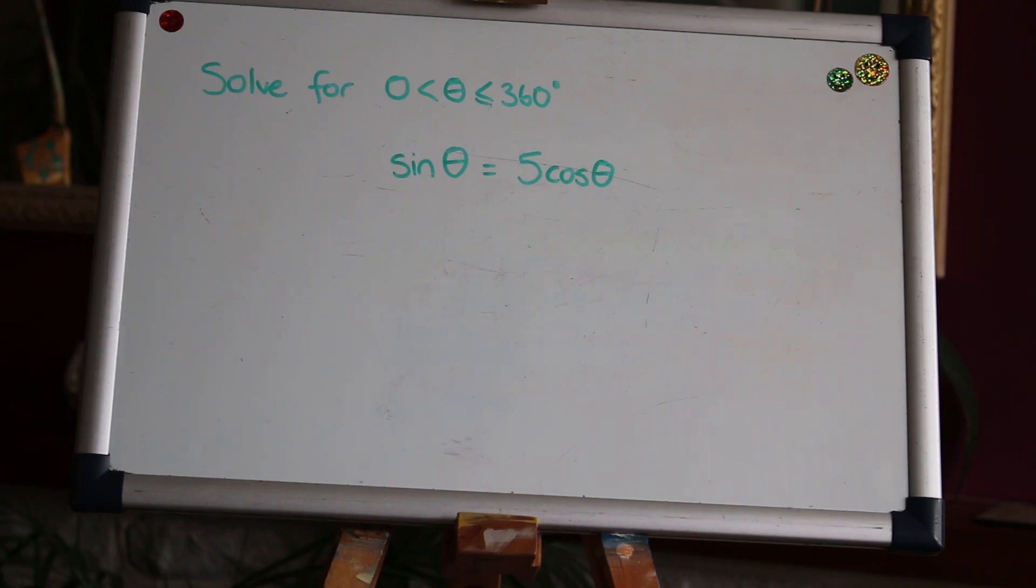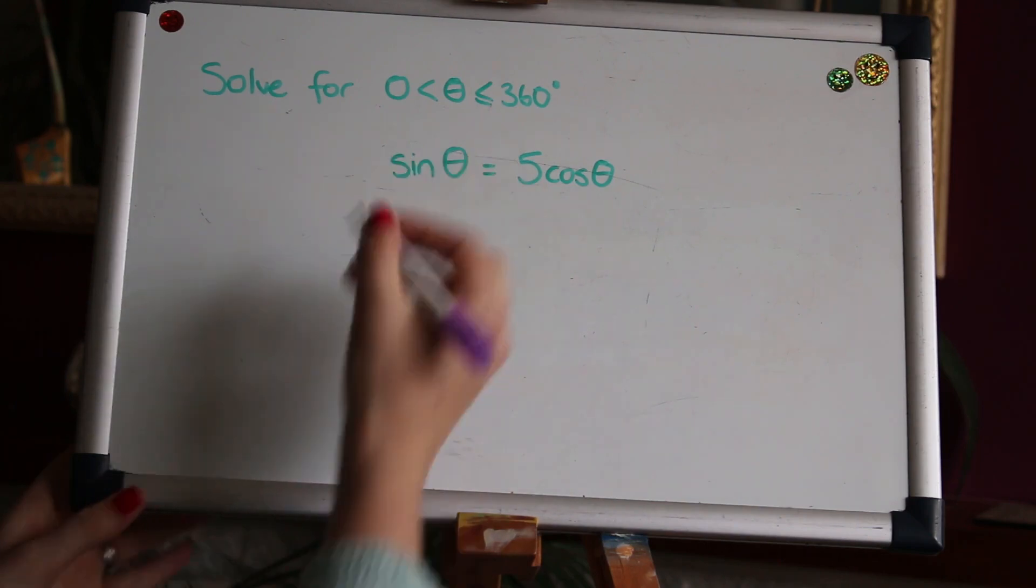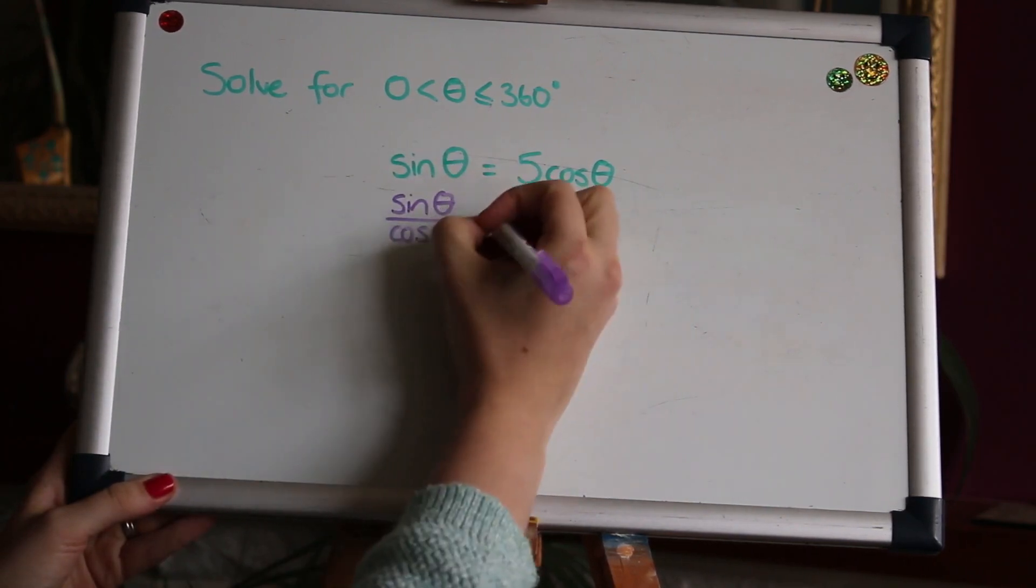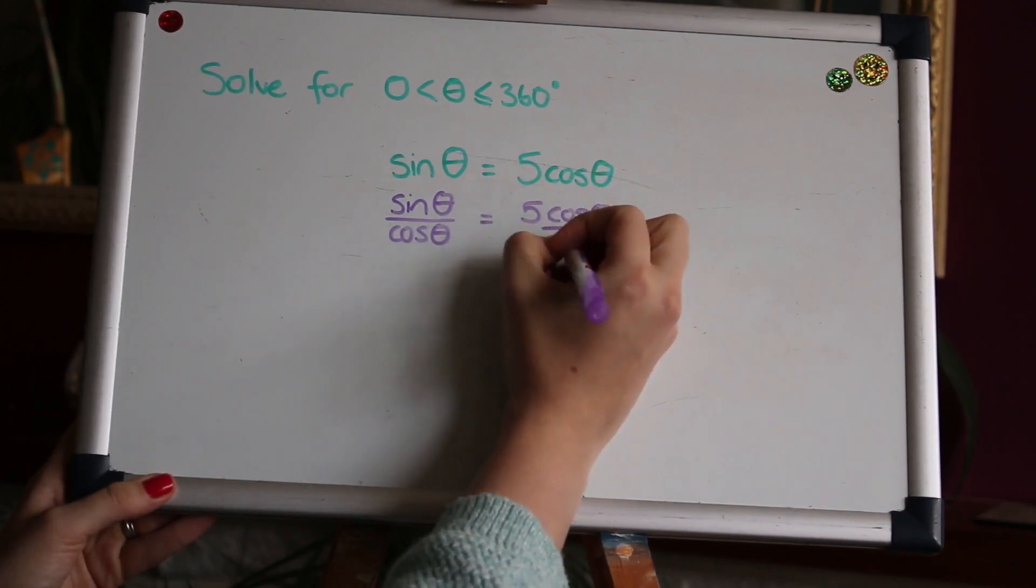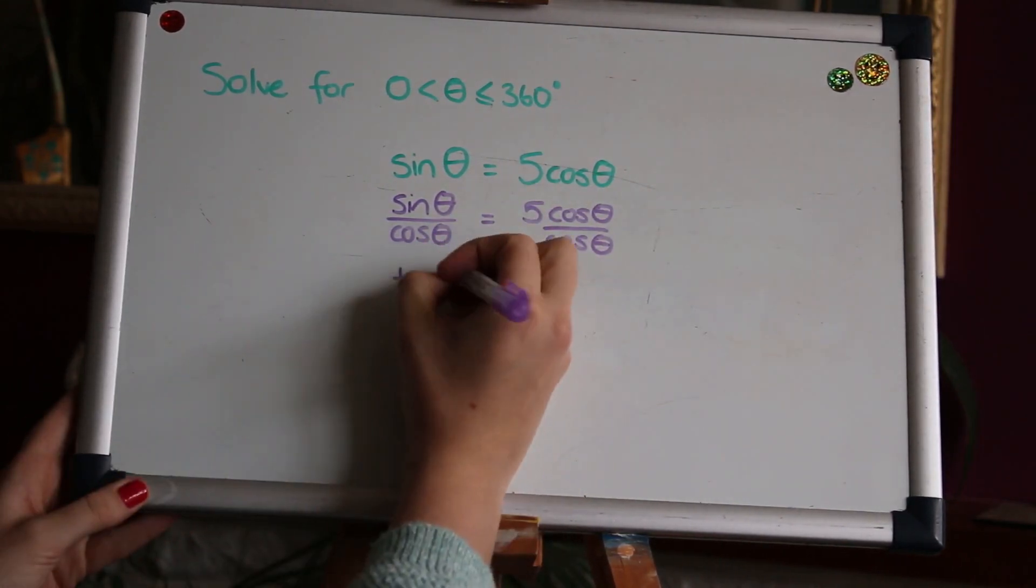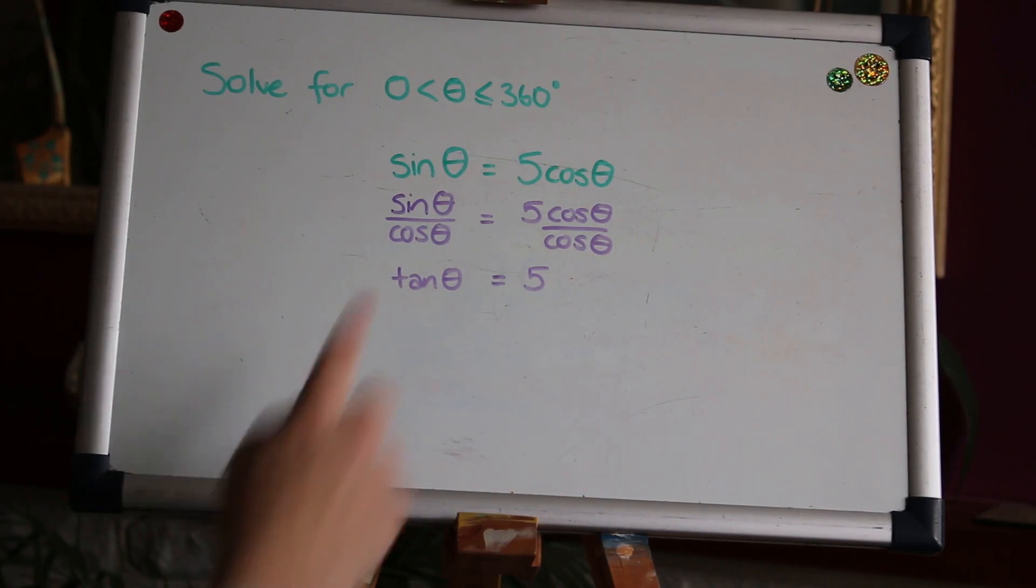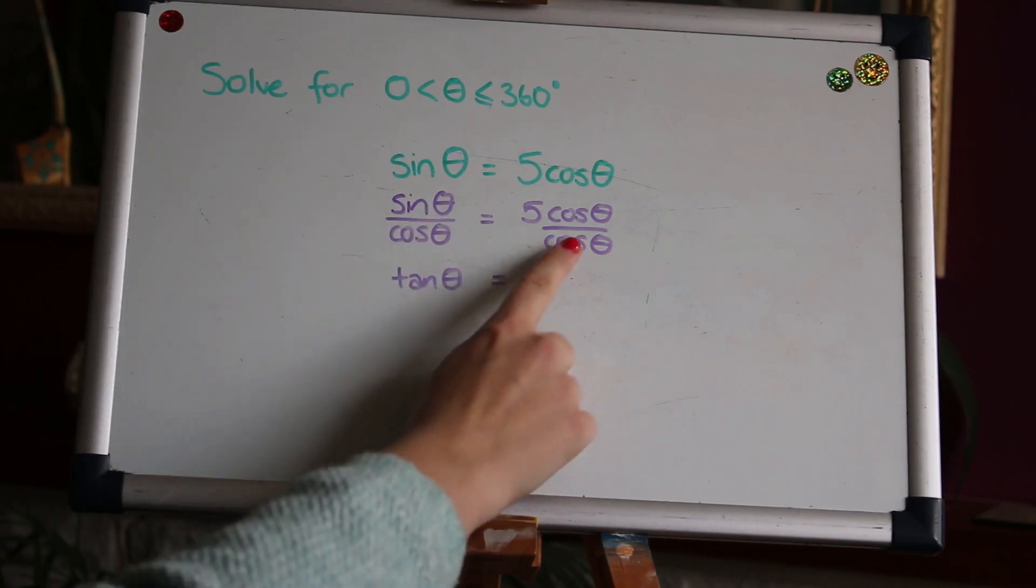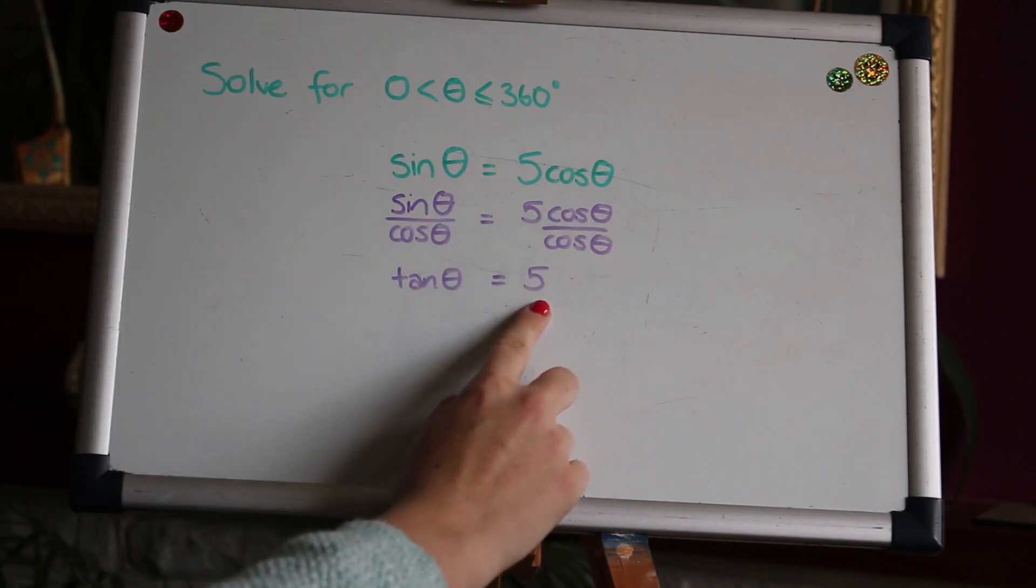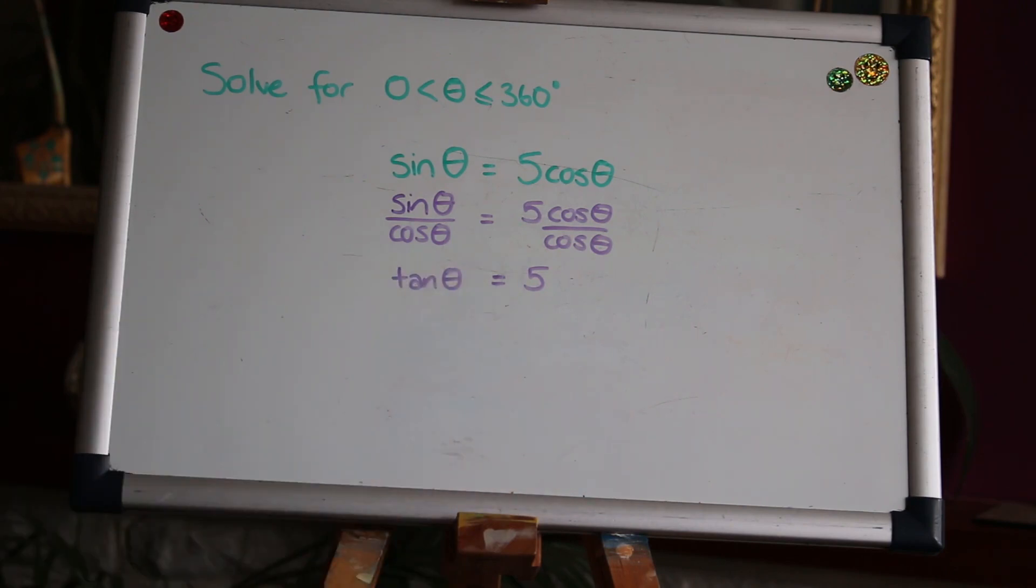So what we're going to do is divide both sides by cos and this is a trick that you can remember and use again in other questions. What that's done is turned this side into tan and got rid of the cos on the right hand side to leave us just with five. Now we've got a simple straightforward trig equation that we can solve.